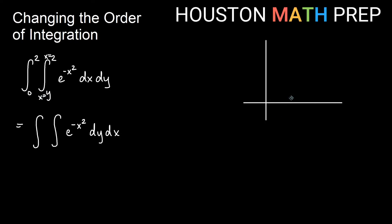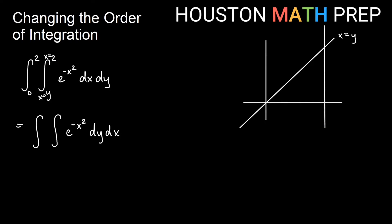x equals y is the line that basically has slope 1 and goes through the origin — so this is x equals y, also known as y equals x. And then x equals 2 is a vertical line through 2. If we draw through in the x direction, we should first go through x equals y and then through 2. So if I enter the region here and exit the region here, then this triangle is the actual region. This is my region R.